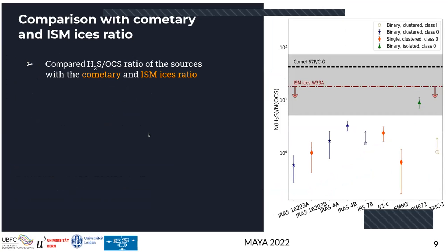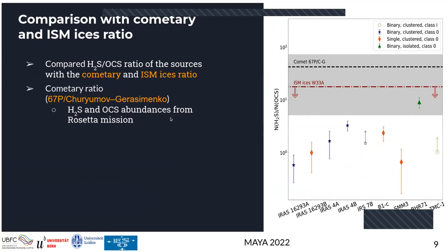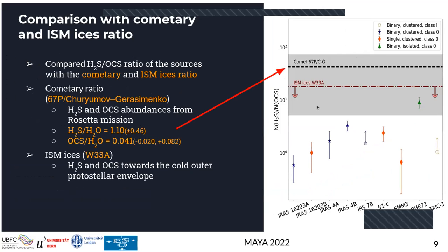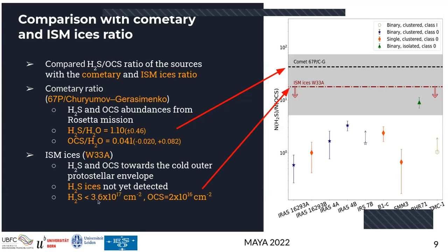Once we had the ratios, we compared the H2S/OCS ratio with that of comets and ISM ices. For the cometary ratio, we chose comet 67P/CG because we have H2S and OCS abundances from the Rosetta mission along with their uncertainties — shown as a black dashed line with a gray shaded uncertainty region. For ISM ices, we chose W33A, a high-mass star whose cold outer protostellar envelope is assumed to represent ices. Since H2S ices are difficult to detect in infrared spectra, we only have an upper limit on H2S, while OCS is detected and shown as a red dash-dotted line.